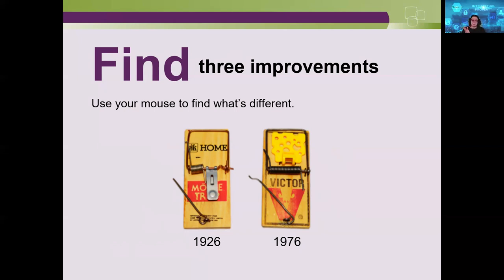Now they're giving another object — a mousetrap — that may be easier to understand. You have the original patent from 1926 and another mousetrap from 1976 that has three improvements. If you look at the two, you can easily see the differences.